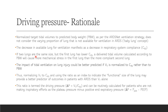For example, if two lungs are of the same size but the first lung has lower respiratory compliance, then the delivered tidal volume calculated according to predicted body weight will cause more mechanical stress in the first lung than in the more compliant second lung. So the impact of tidal ventilation on lung injury could be better predicted if tidal volume is normalized to respiratory system compliance rather than to predicted body weight.